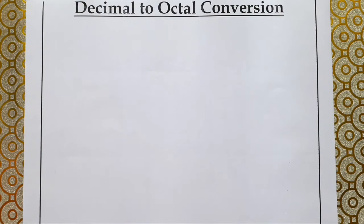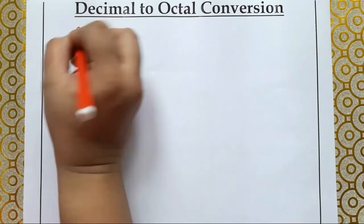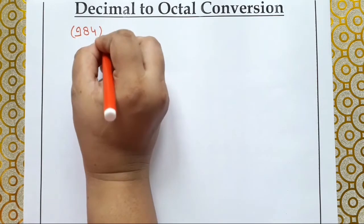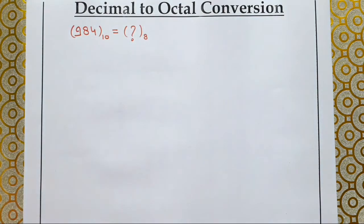Hello students, welcome to my channel. I am your teacher. We are studying Class 11th's second chapter, Data Representation, and in this chapter we are learning to convert one number system to another. Today in this video we will learn to convert decimal numbers to octal numbers and octal numbers to decimal numbers. Let's start with decimal to octal conversion. First, let's take a decimal number — let's say I have taken the number 984 — and we need to find out its equivalent octal number.